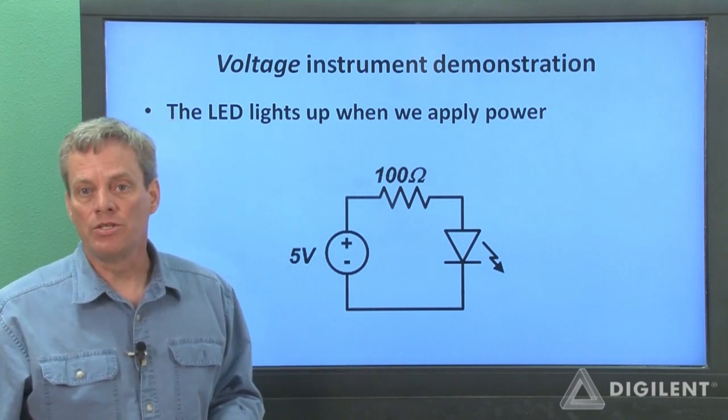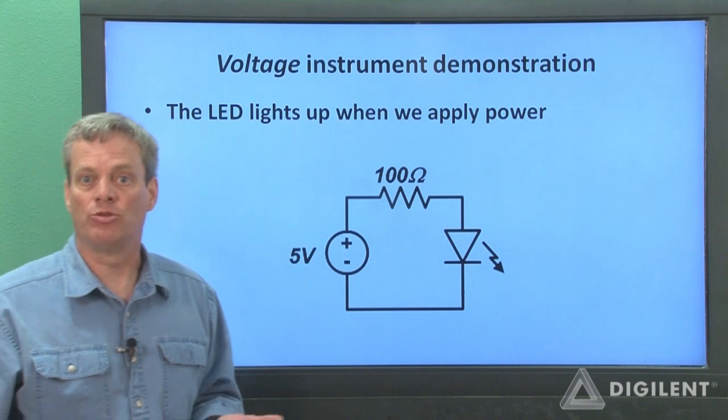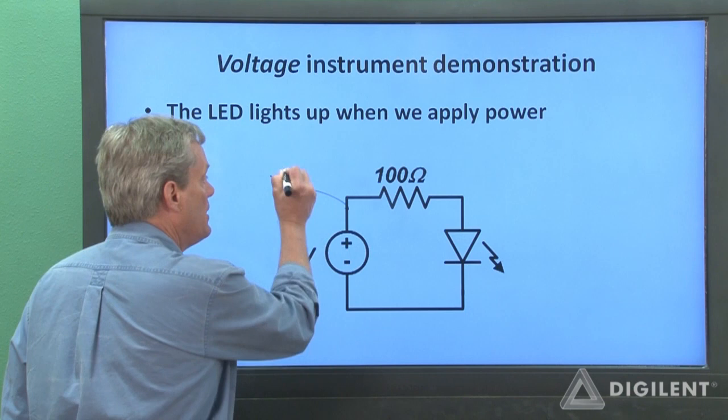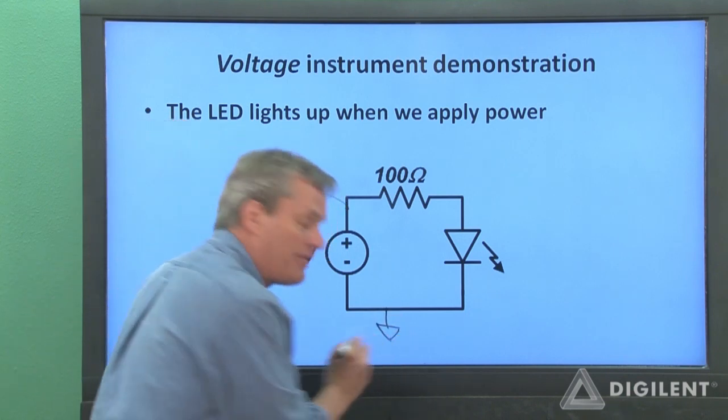There are a couple of ways we can do this, since the voltage instrument has positive and negative 5 volt supplies. Probably the most obvious way is to apply positive 5 volts using V plus here and ground at this terminal.